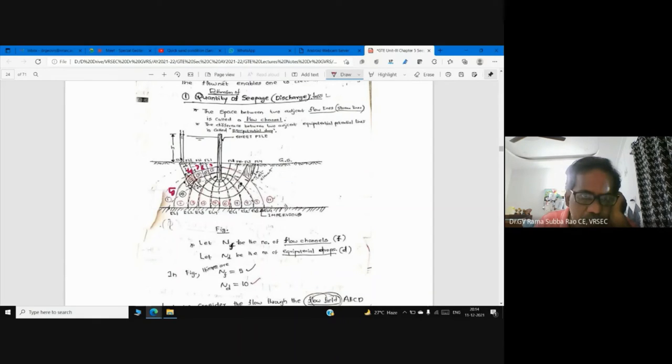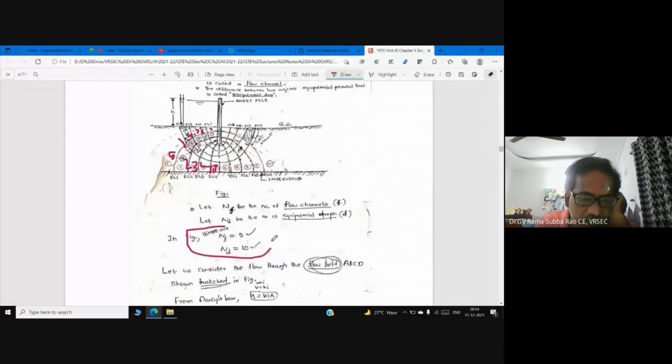How many flow channels are there? How many potential drops are there? One, two, three, four, five. Here it is mirror, here it is five, again it is five. Total is ten. Number of flow channels: five. Number of potential drops: ten. So we are drawing flow net.